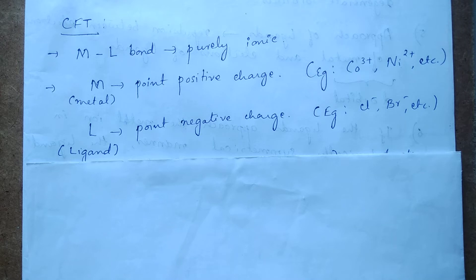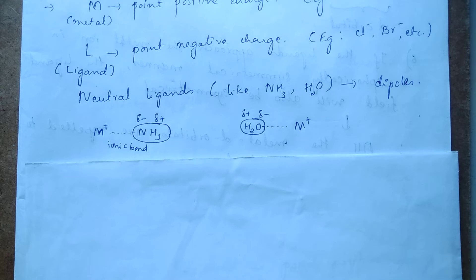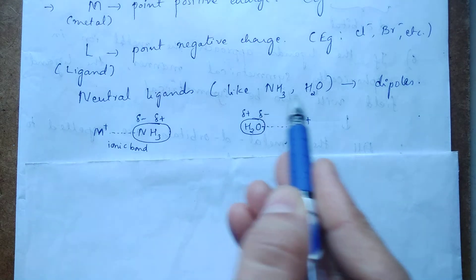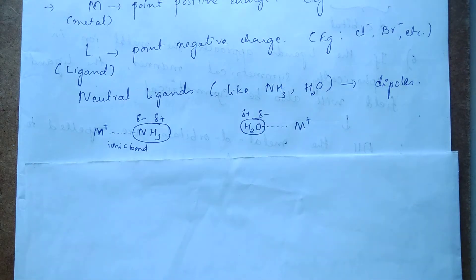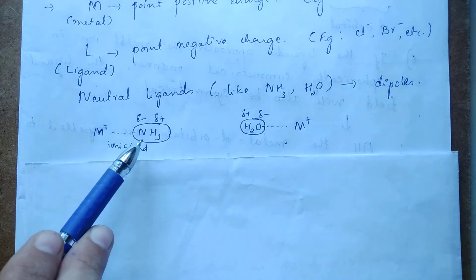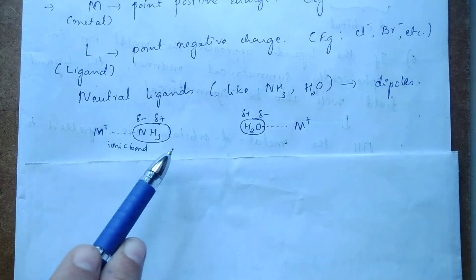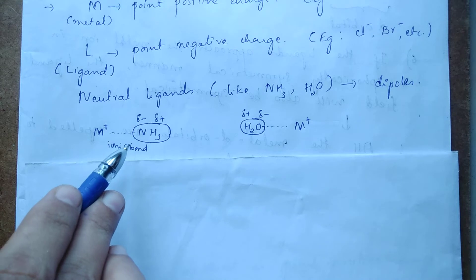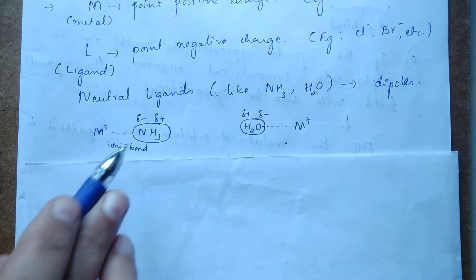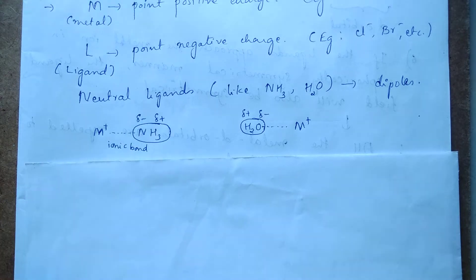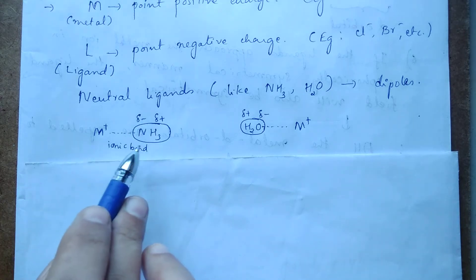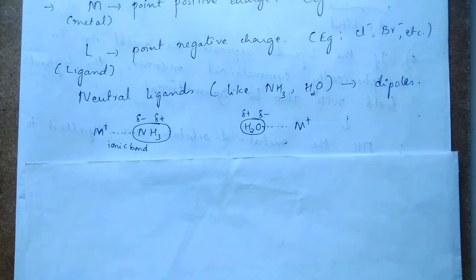You may have a doubt: there are ligands like water and ammonia which are neutral, so how can we consider them as point negative charges? In the case of neutral ligands like ammonia, nitrogen has greater electronegativity compared to hydrogen. That's why nitrogen develops a partial negative charge and hydrogen develops a partial positive charge. This makes the molecule a dipole — a single molecule with two poles, one negative and one positive.